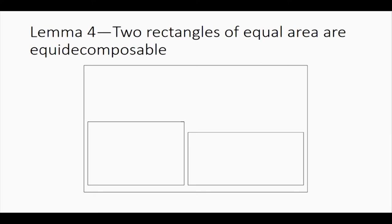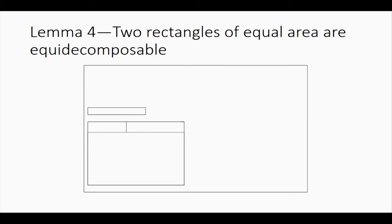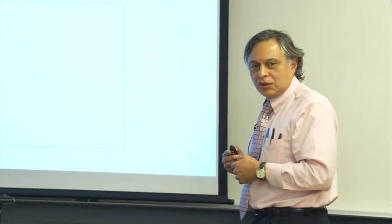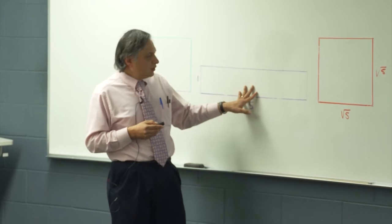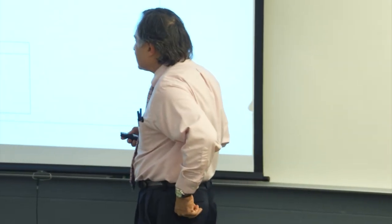Lemma 4: two rectangles of equal area are equi-decomposable — we can cut one into pieces to form the other. We might be tempted to slide one across on top of the other and keep cutting, but we don't know how long that process will take — it could take forever. That process doesn't work too well.